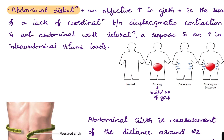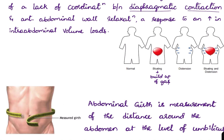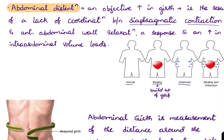Before diving further into the topic, we should understand two terminologies: abdominal distension and abdominal girth. Abdominal distension is an objective increase in abdominal girth, resulting from lack of coordination between diaphragmatic contraction and anterior abdominal wall relaxation in response to an increase in intra-abdominal volume. Bloating is a buildup of gas, whereas distension is an objective increase in abdominal girth.